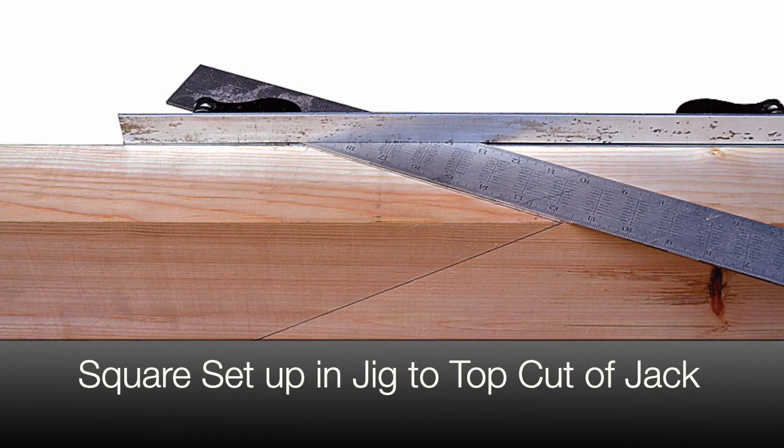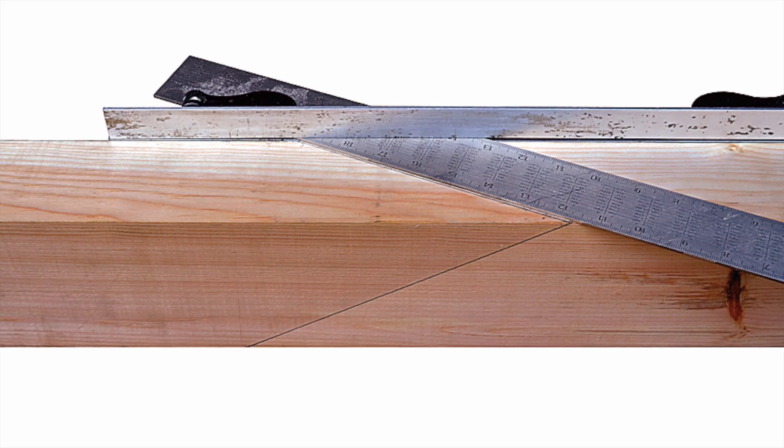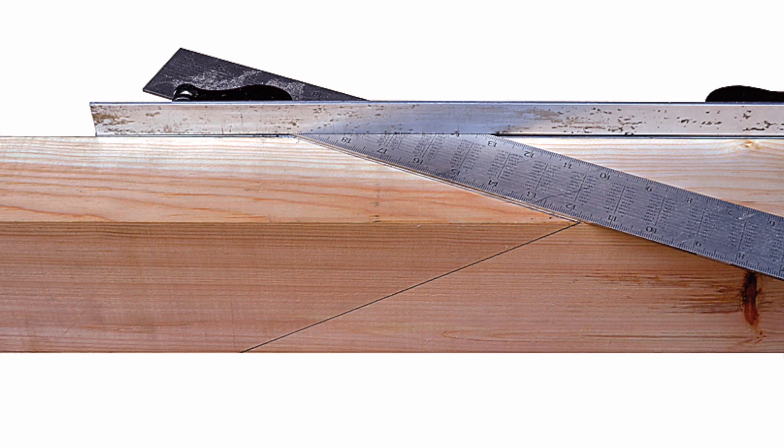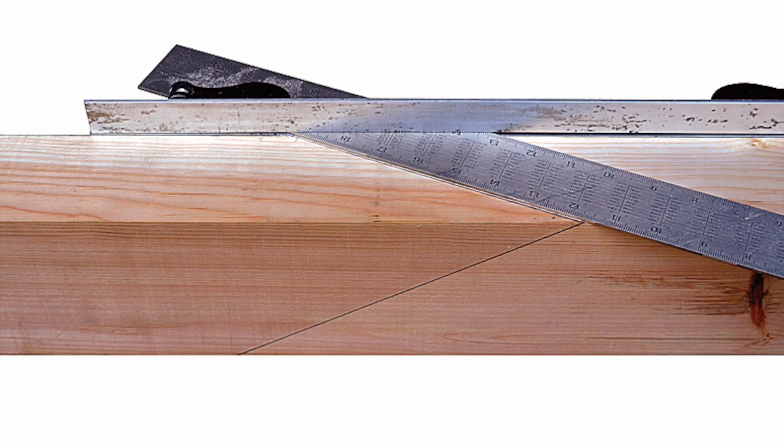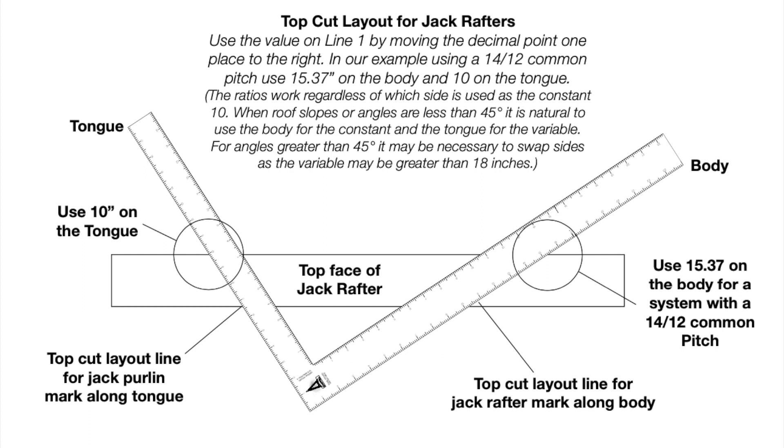A point of note, the ratios in this example work regardless of which side of the square is used as the constant 10. It is often necessary to change the constant of 10 to a greater number in order to better utilize the depth and breadth of the square. In this case, simply multiply the chosen number by this ratio and use the results as the location opposite the constant.